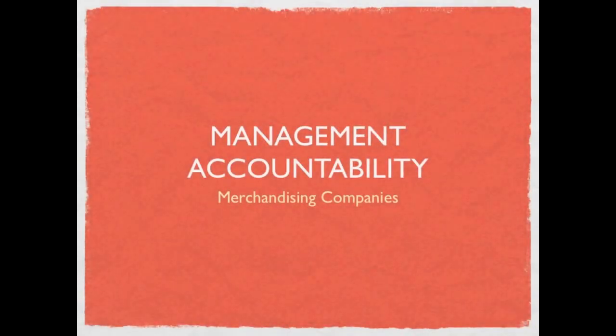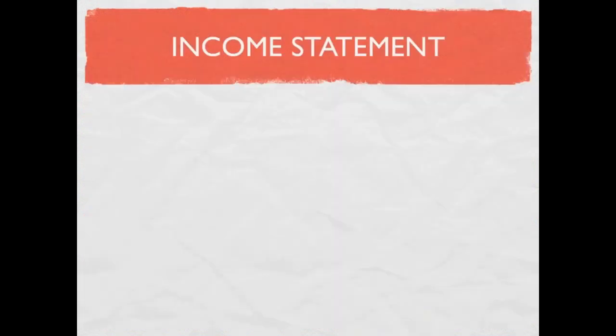This is part three in our management accountability series and we're going to be discussing merchandising companies. The first thing we want to look at is the income statement for a merchandising company. A merchandiser is a little different from a service company — whereas a service company produces or sells a service, a merchandising company sells a product. They do not produce a product; they simply sell a product purchased from a wholesaler or someone else.